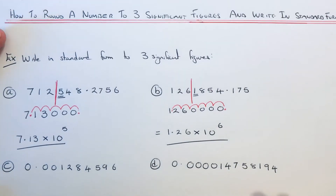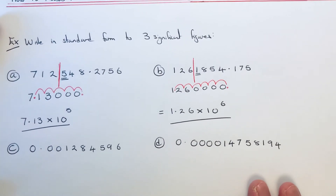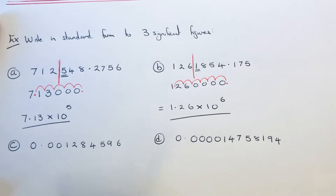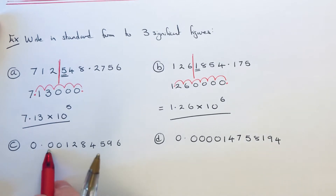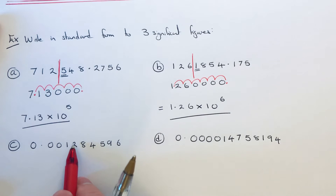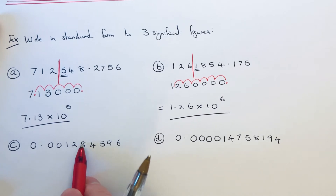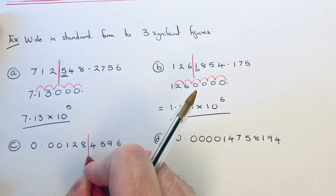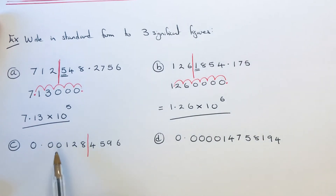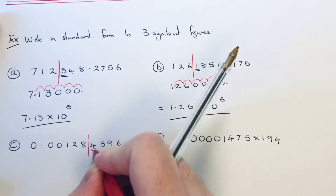Let's move on to part c. This time we've got a small number, so we ignore the zeros at the start for significant figures. The first significant figure is the one, the second is the two, and the third is the eight. This rounds down to 0.00128 because the next number is a four.